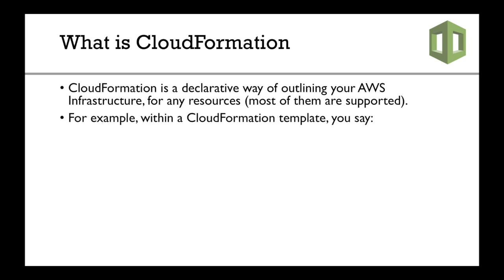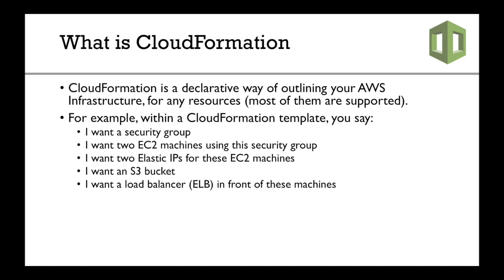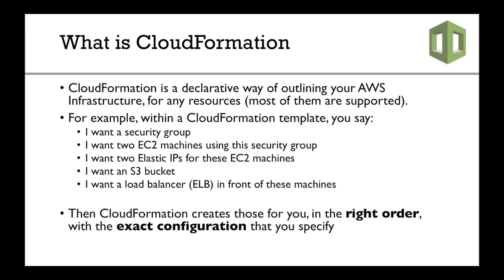For example, within a CloudFormation template, you will write: I want a security group. I want two EC2 machines with this security group. I want two elastic IPs for these EC2 machines. I want an S3 bucket because that's where my application data is going to be. And I want a load balancer — an ELB — in front of these machines. And CloudFormation automatically creates everything you've described for you in the right order with the exact configuration that you specify.